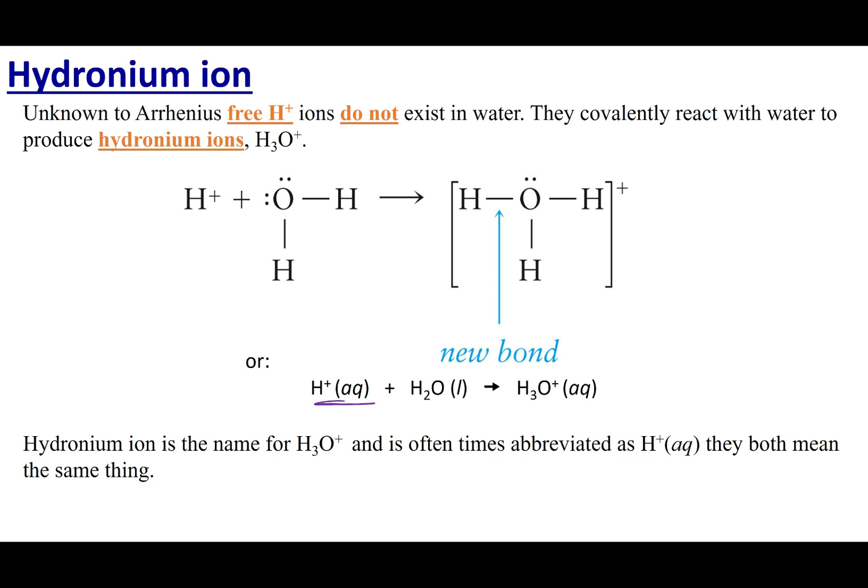Now, this is kind of a misnomer. If I have H+ in the vicinity of water, H2O, what's going to happen is it's going to form a new bond, and I'm going to make this polyatomic ion, H3O+. So this is called the hydronium ion, and this is what really exists.